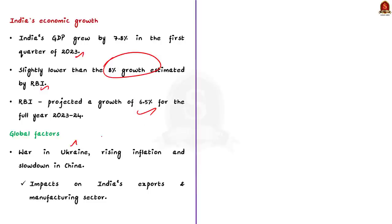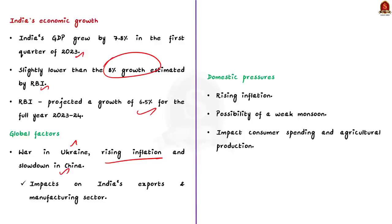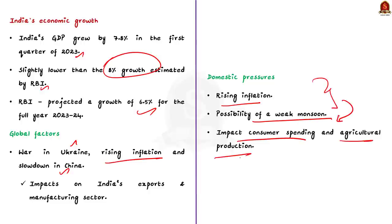Regarding global factors, the global economy is currently facing various obstacles like the war in Ukraine, rising inflation, and the slowdown in China. These headwinds could impact India's exports and manufacturing sector. India is also facing domestic pressures like rising inflation and the possibility of a weak monsoon, which could impact consumer spending and agricultural production.